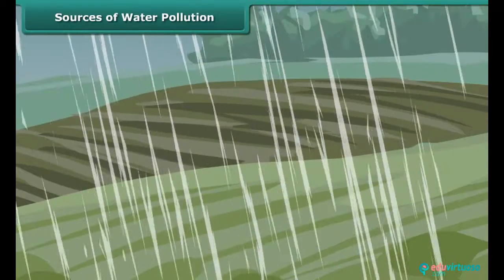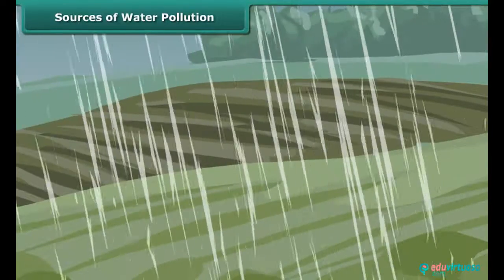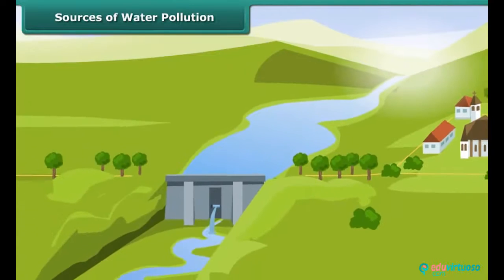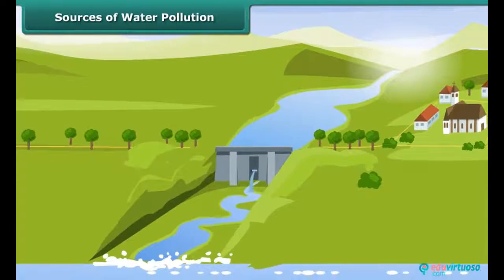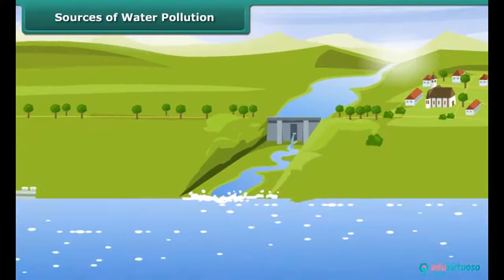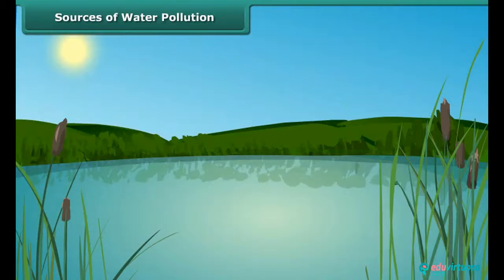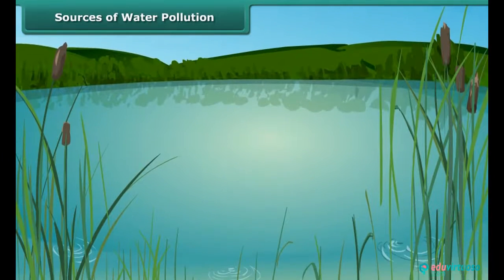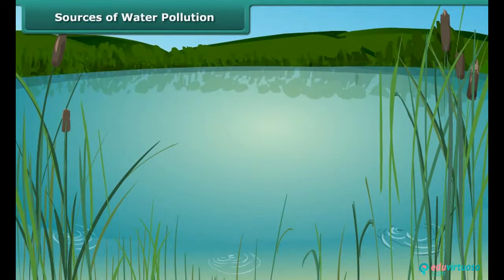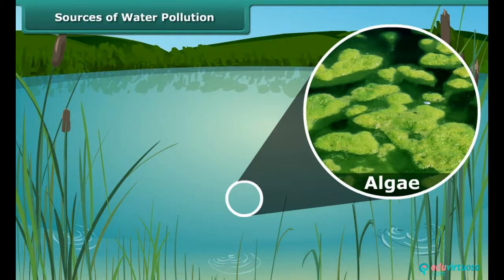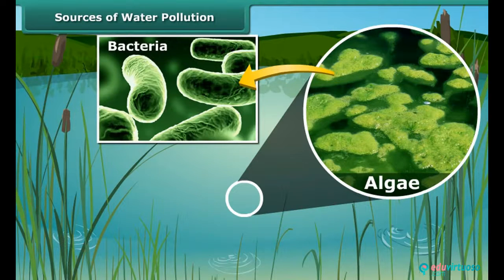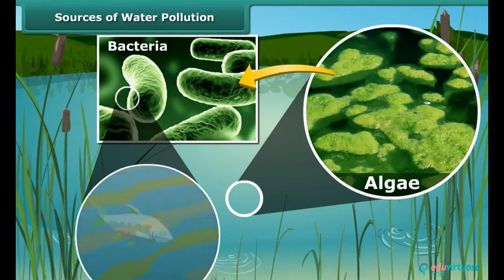During rainfall, large amounts of fertilizers get washed from the fields and fall into ponds and rivers. These washed-off fertilizers act as nutrients for algae to flourish. When these algae die, they serve as food for decomposers like bacteria. Bacteria use up most of the oxygen in the water, and as a result, fish and other aquatic animals die due to lack of oxygen.